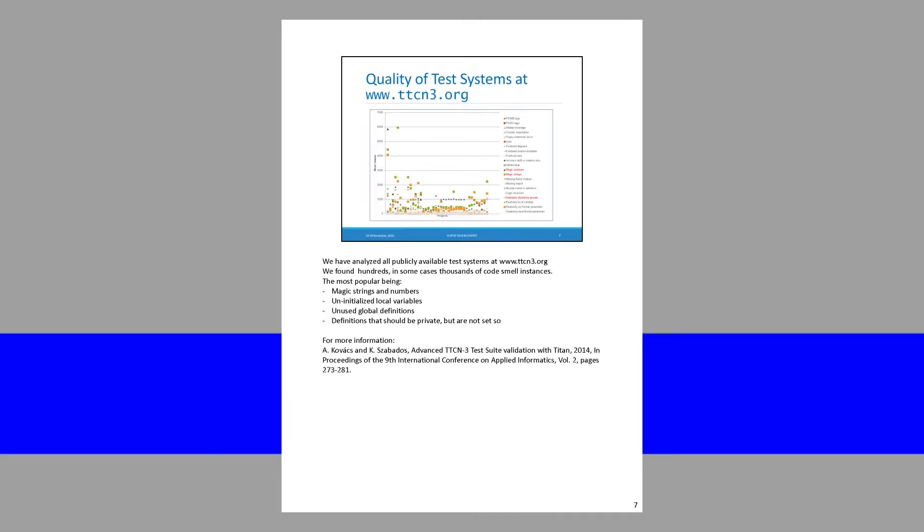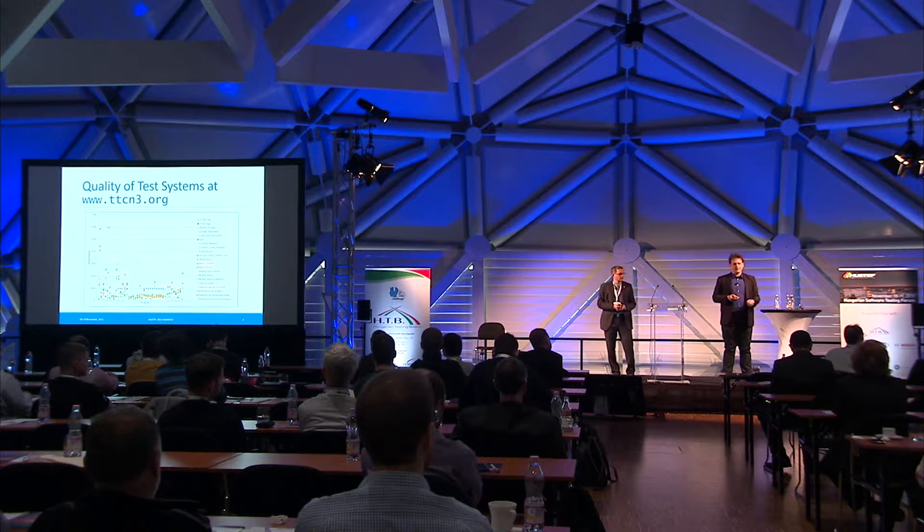We wanted to build our research from the ground up. We defined more than 40 code smells — properties of the code which are not exactly problems but are usually used incorrectly. For example, sending a 30-character string of zeros and ones on the network is technically okay, but having that hardcoded in your code makes it completely unmaintainable. We analyzed all test suites on the www.tt3n3.org page, where you find open-source test suites developed by ETSI and 3GPP for testing communicating systems, and we found lots of issues — some in the hundreds, some in the thousands, in every project analyzed.